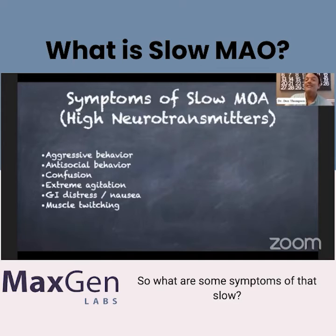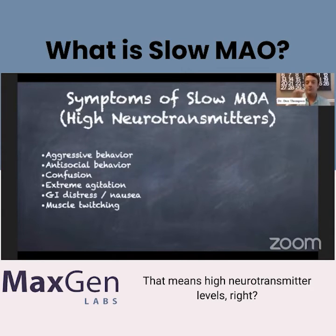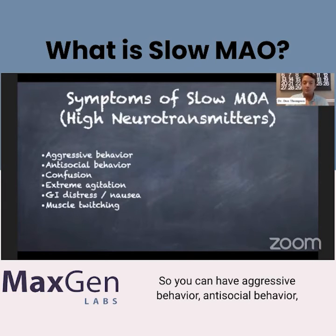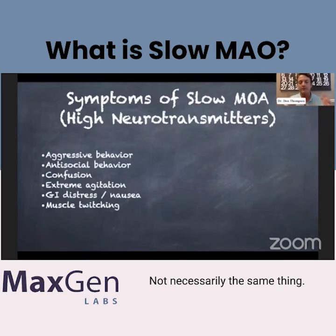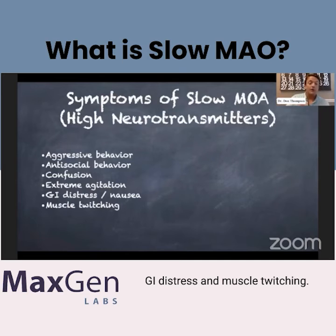But what are some symptoms of that slow? That means high neurotransmitter levels. So you can have aggressive behavior, antisocial behavior, confusion, extreme agitation — and that's not necessarily aggressive, but you can be agitated, not necessarily the same thing. GI distress and muscle twitching.